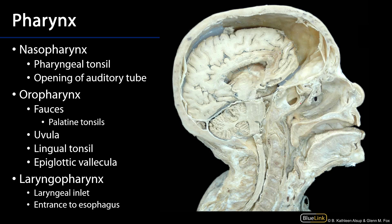Now let's look at the nasopharynx. There are two elements here to know about. On the roof is the pharyngeal tonsil, also known as the adenoid — a mass of lymphoid tissue. Inferior to that, we have the opening to the auditory tube, also known as the Eustachian tube or pharyngotympanic tube, and in association with that, the tubal tonsils.